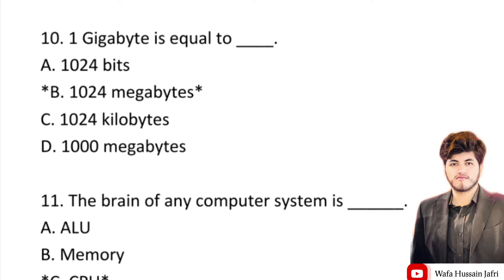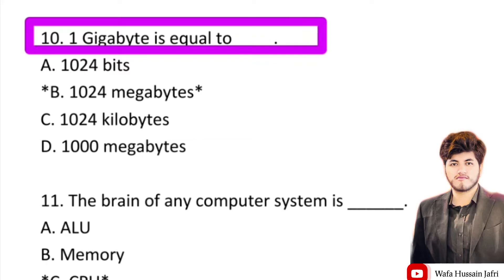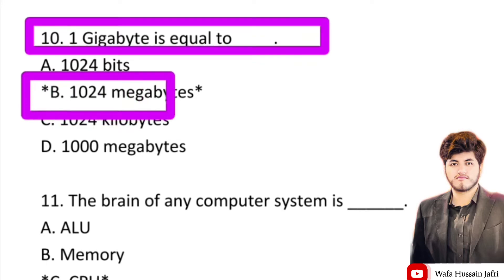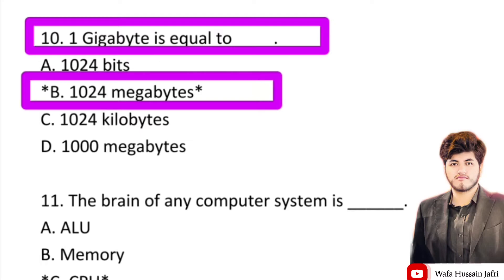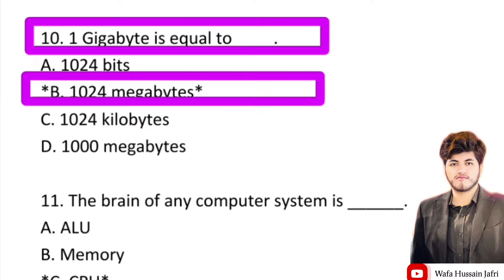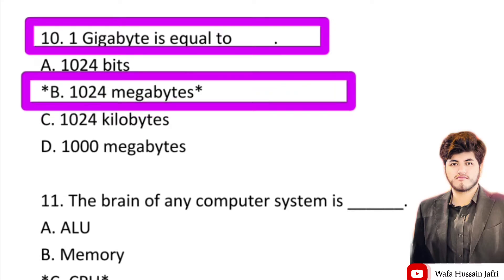The next important question — it is a very important and most repeated question in relevant tests: one gigabyte is equal to — the right answer is 1024 megabytes.